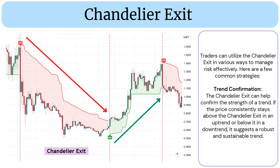Trend confirmation: the Chandelier Exit can help confirm the strength of a trend. If the price consistently stays above the Chandelier Exit in an uptrend, or below it in a downtrend, it suggests a robust and sustainable trend.